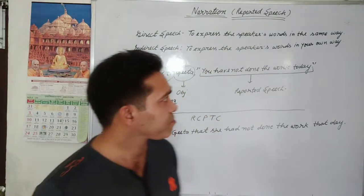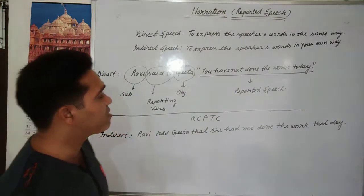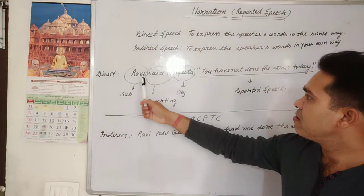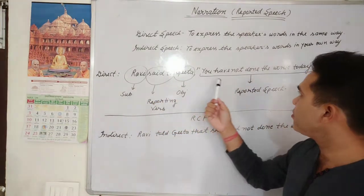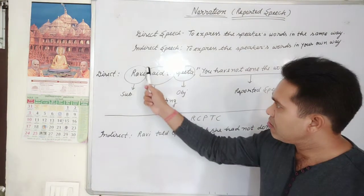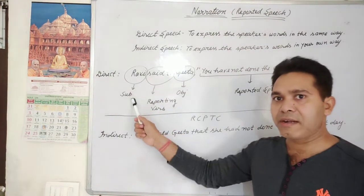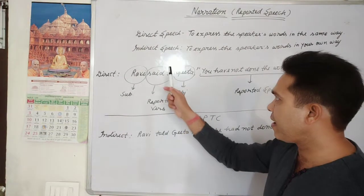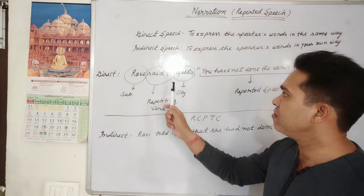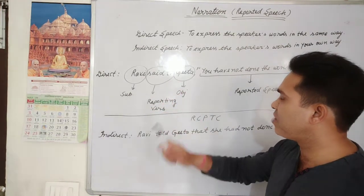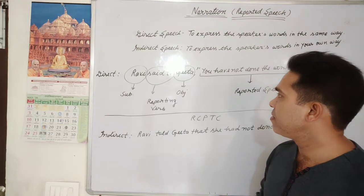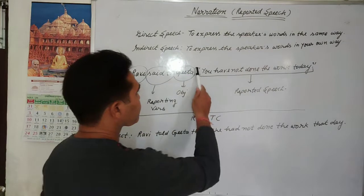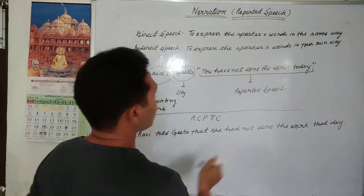I have written one sentence for you. Direct speech: Ravi said to Gita, 'You haven't done the work today.' Here, 'Ravi' is called the subject, 'Gita' is called the object, and 'said to' between subject and object is called the reporting word. What is given in inverted commas is called the reported speech.